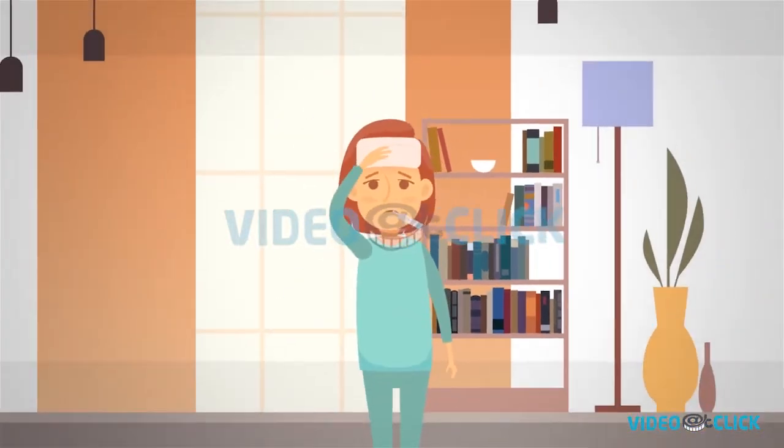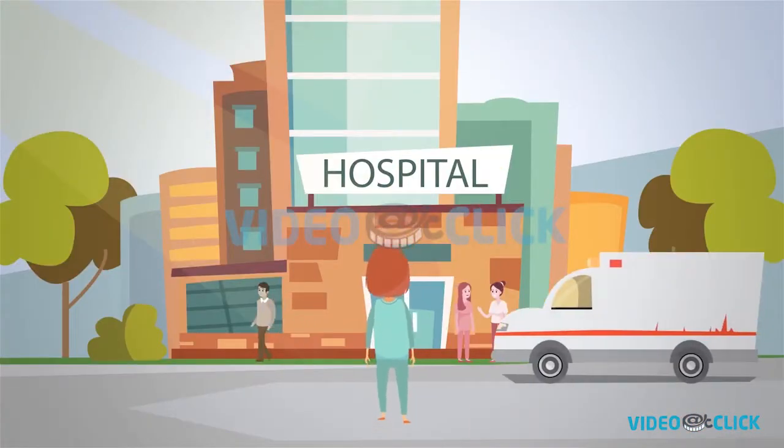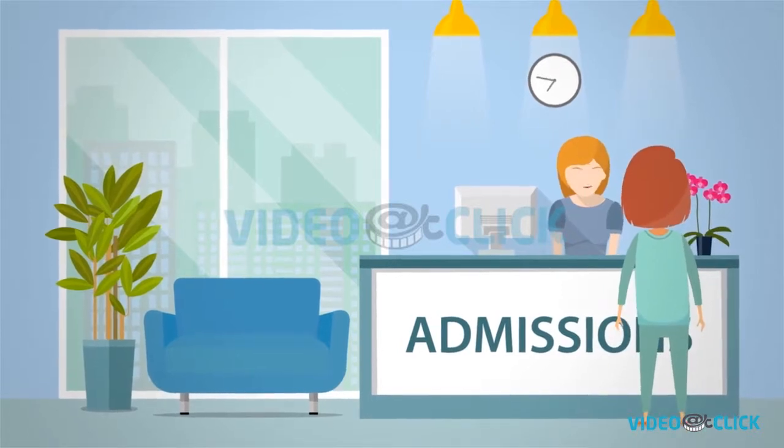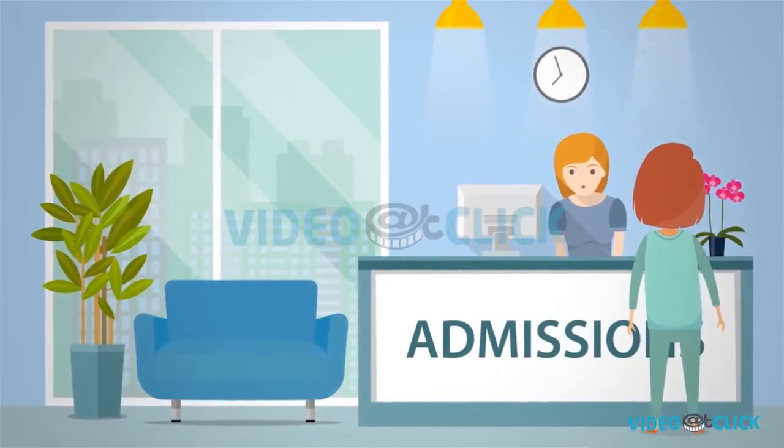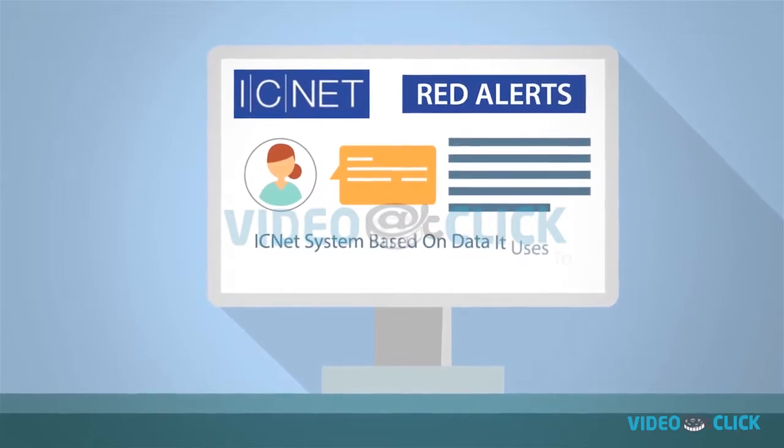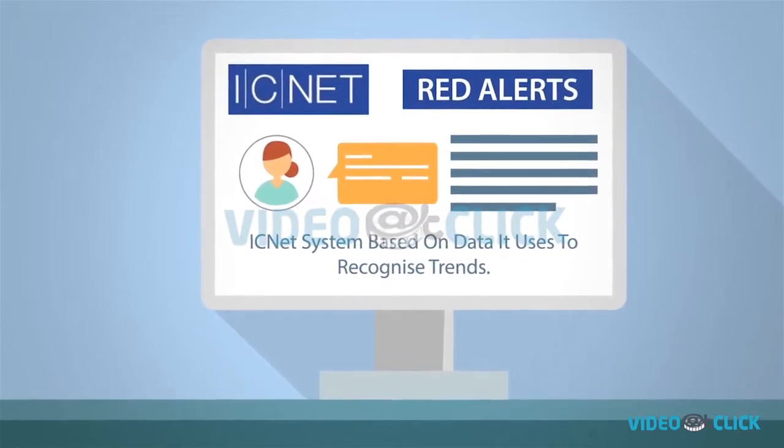Jackie is also very unwell. Her hospital has an infection intelligence platform called ICnet. When Jackie is admitted, alerts come up in the ICnet system based on data it uses to recognize trends.